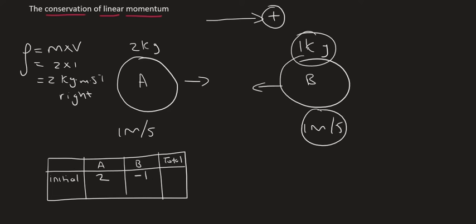So the total is not going to be 3. In fact, it's going to be 1 to the right. So the total momentum of this system before the collision is 1 to the right. So after these two objects collide, the answer also has to be 1 to the right. That is what we mean by conservation of linear momentum.